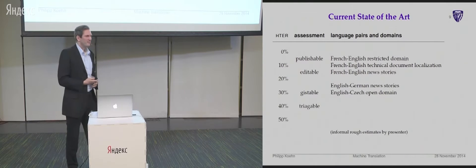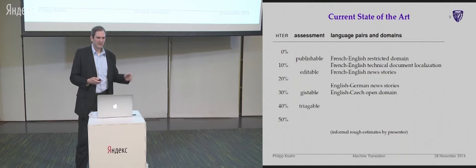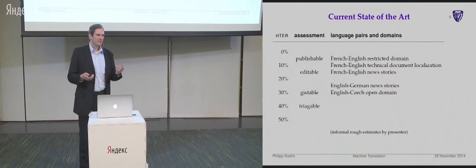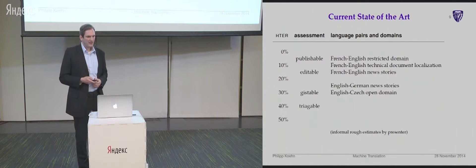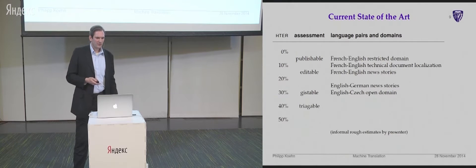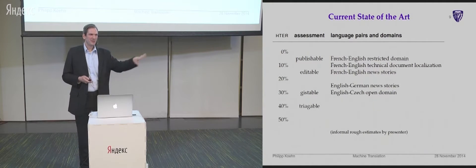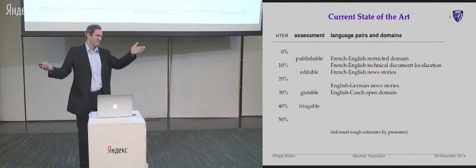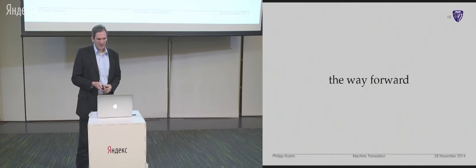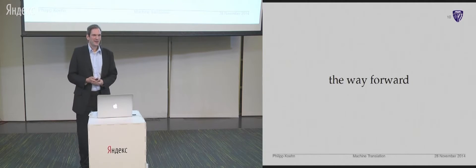Here is roughly where we are now. For French-English we do really well — as you saw in the earlier example, in a restricted domain you might even be able to publish the material with maybe a warning label. It's definitely at the point where you can translate news stories and it's faster to post-edit than translate from scratch. But for other languages like German and Czech, we do worse. I was not trying to guess where we are with English-Russian, because if I get Russian output it looks very Russian to me and I'm not sure how good the quality is.